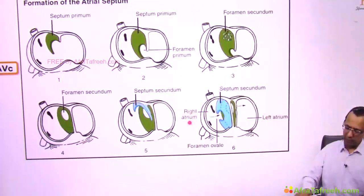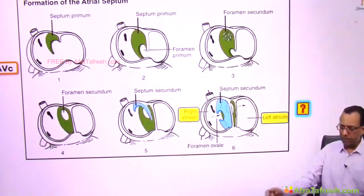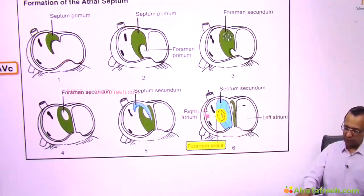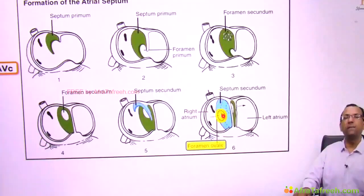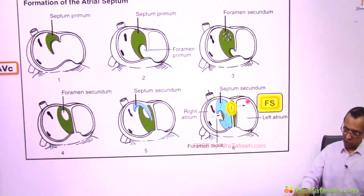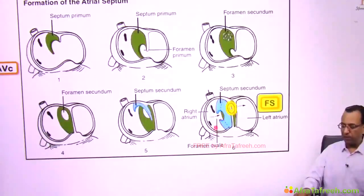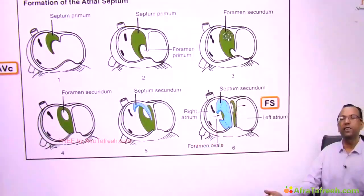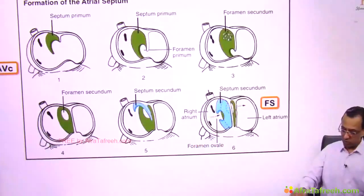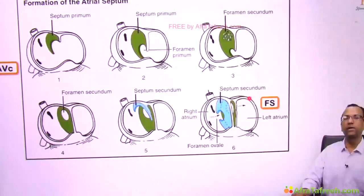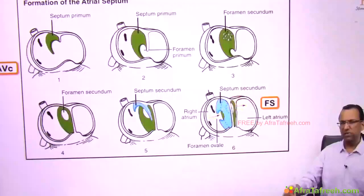Look at the flow: blood in the right atrium will enter the foramen ovale, then follow an oblique course to reach the foramen secundum, which is more superior, and then drain into the left atrium. So blood flows obliquely because foramen ovale is inferiorly present and foramen secundum is superiorly present — that is why the oblique course.